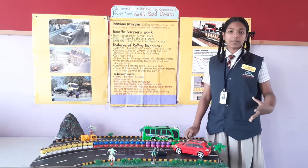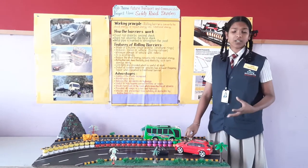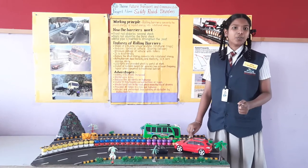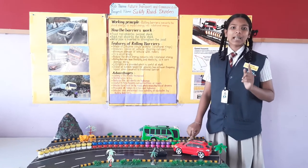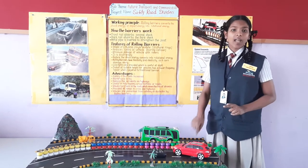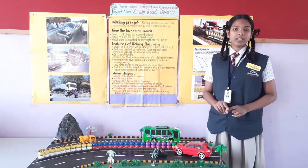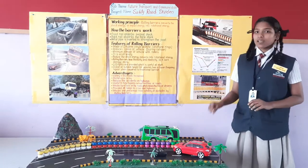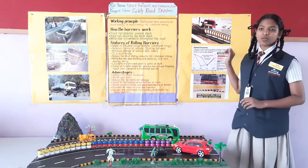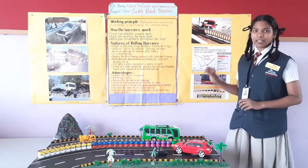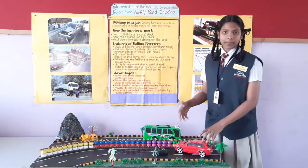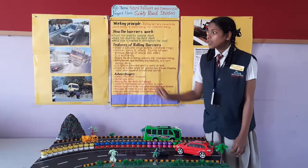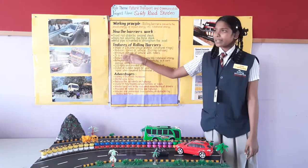Many people with over speeding are hitting through the dividers which are constructed with cement and metallic railings. And do you know that our India ranks number one in road accidents? According to the Ministry of Road Transport and Highways, 64.4% of road accidents are occurring due to over speed — many people hitting through the dividers like that.